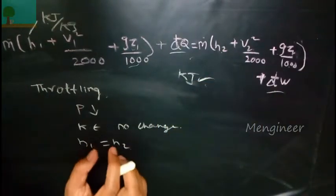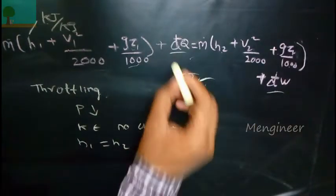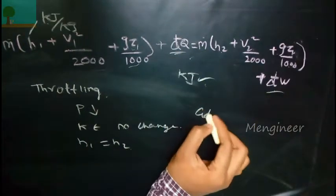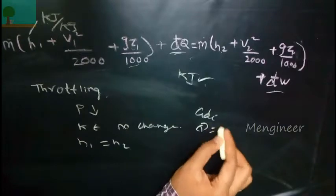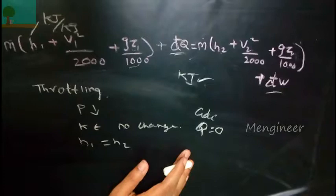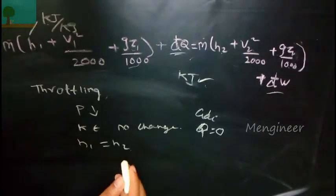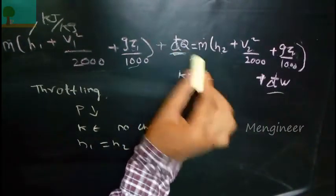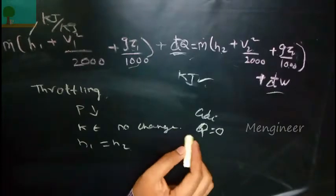Also, for throttling, the kinetic energy will not change. Remember, if it is an adiabatic process, then we should not consider dQ value. You should put zero for dQ.